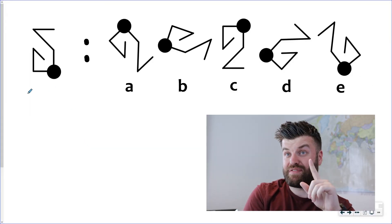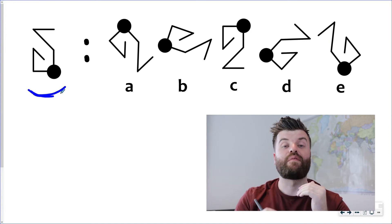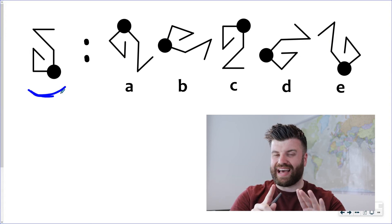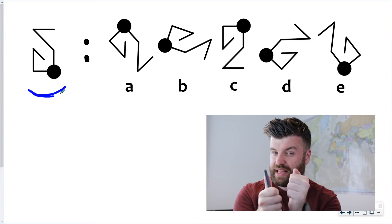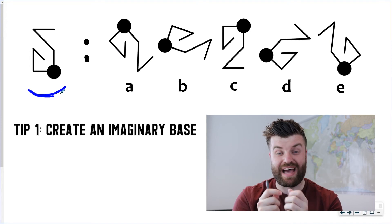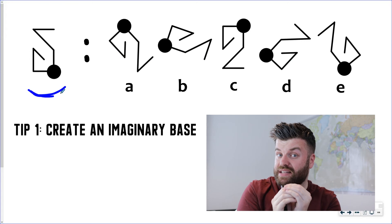So on the screen now we've given you a shape on the left hand side and we want you to have a go matching up with one of the five shapes on the right. Now before you do that let's just have a quick recap of those techniques we talked about. Try and find a base for your shape and then look at the features and how they relate to that base.